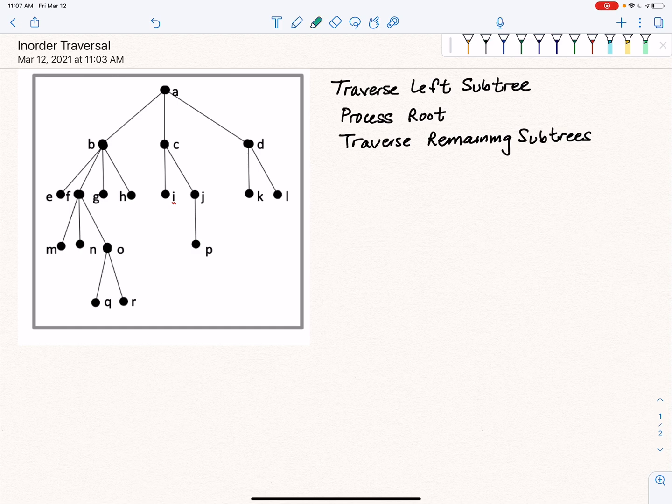So when we start, we're looking at the root of A here. And that means that we're going to traverse the subtree rooted at B first, followed by A, followed by the subtree rooted at C, followed by the subtree rooted at D.